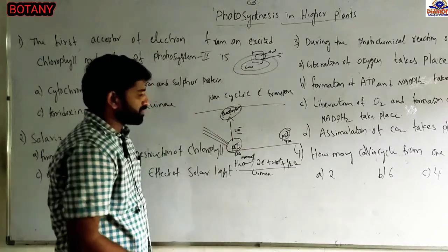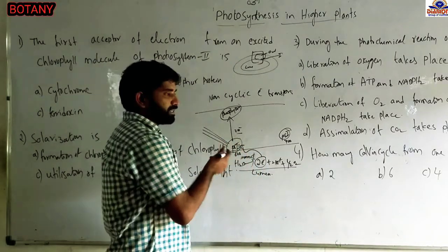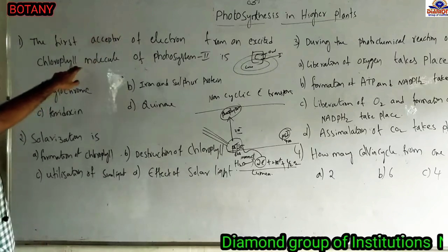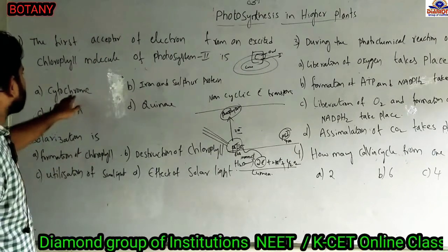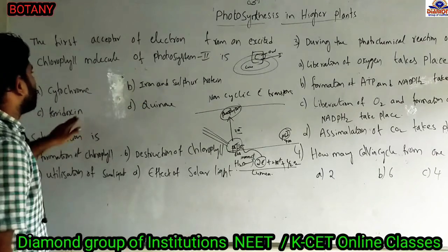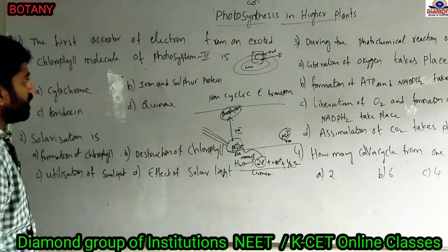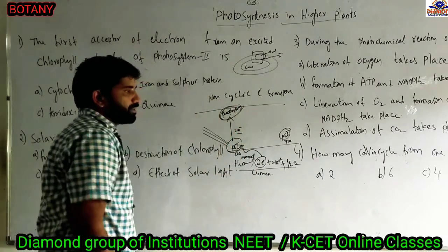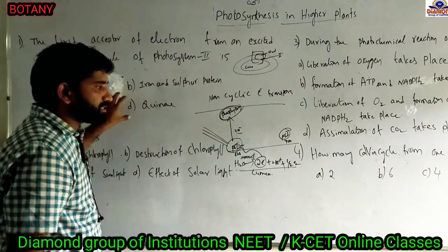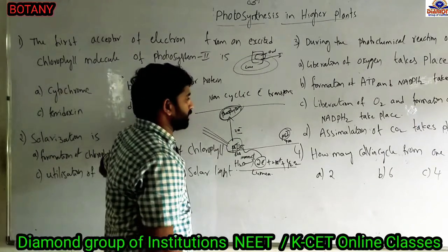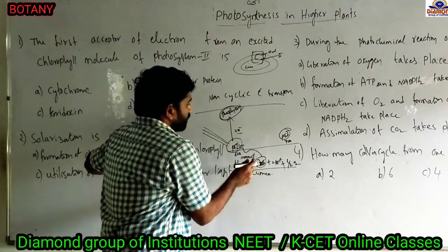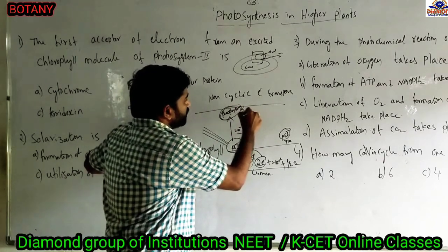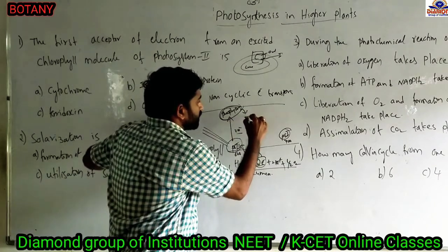This is the photolysis of water. The two electrons released are sent into photosystem 2. The first acceptor of electrons from the excited chlorophyll molecule of photosystem 2 is pheophytin, but the option was not given. So pheophytin is also considered as part of photosystem 2. From pheophytin, electrons transfer to plastoquinone.